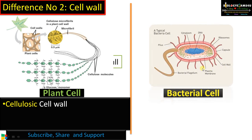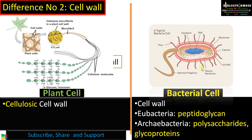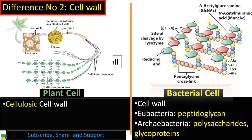Whereas the bacterial cell wall is made up of polysaccharides and proteins. In the case of most bacteria, the cell wall is peptidoglycan. Archaebacteria have a different cell wall composition — it is made up of polysaccharides and glycoproteins. The peptidoglycan cell wall is made up of N-acetylglucosamine and N-acetylmuramic acid that are cross-linked by amino acids, as you can see here.